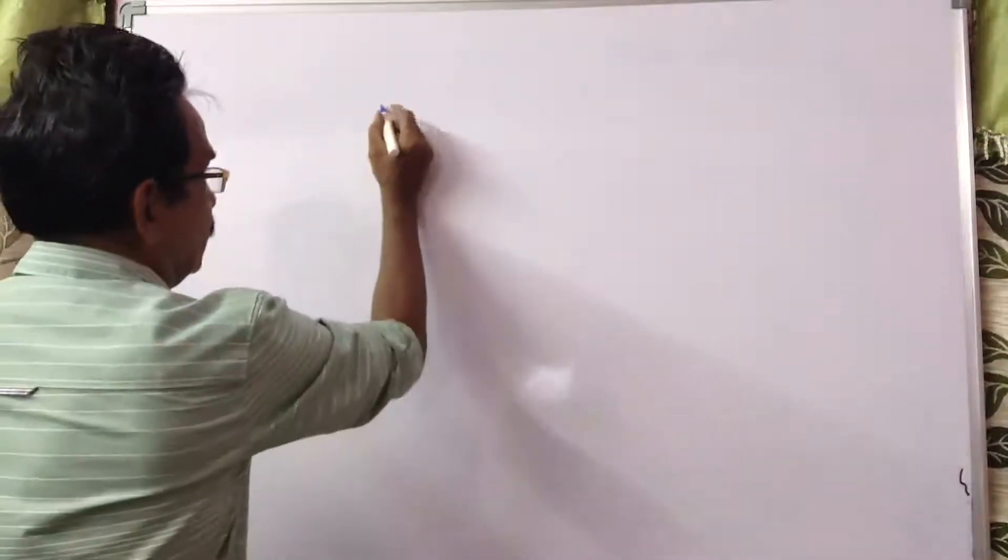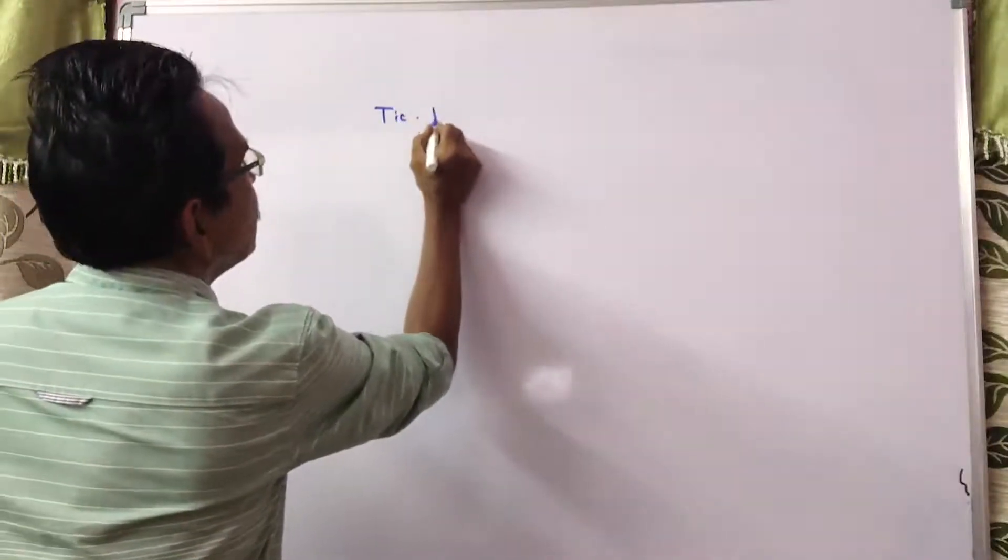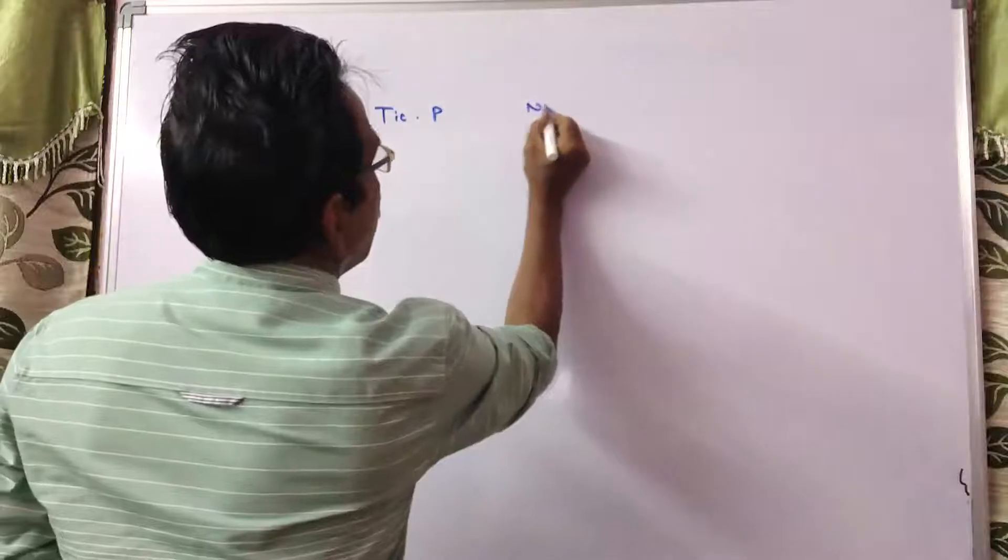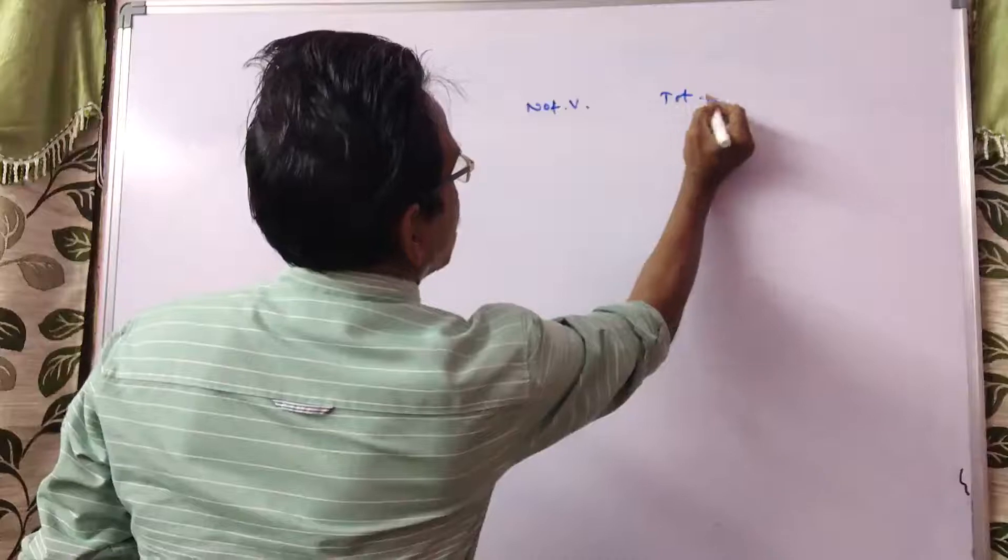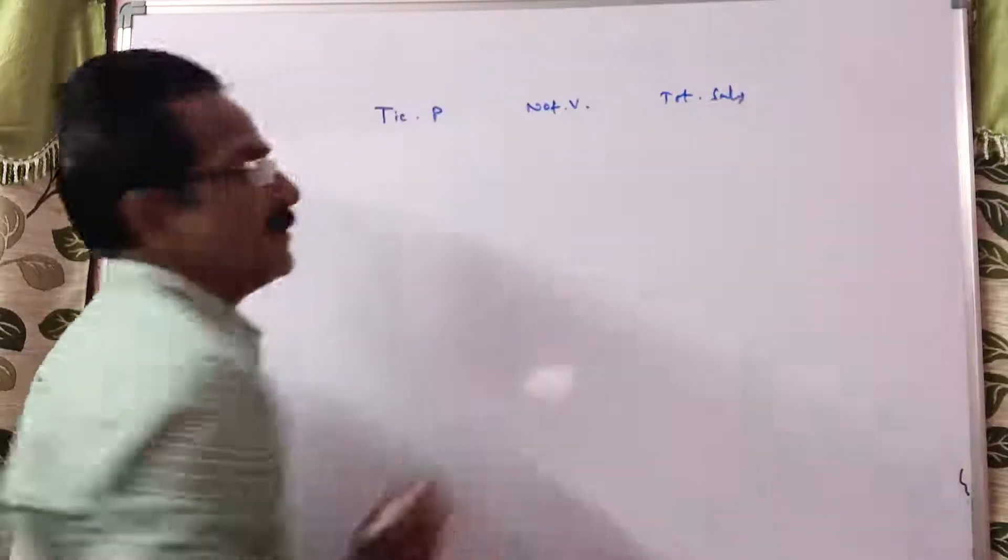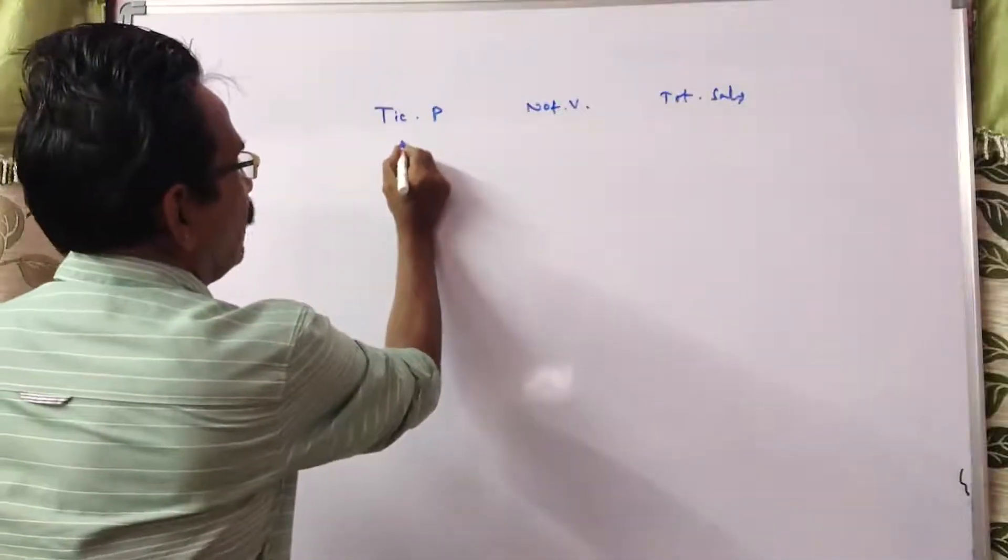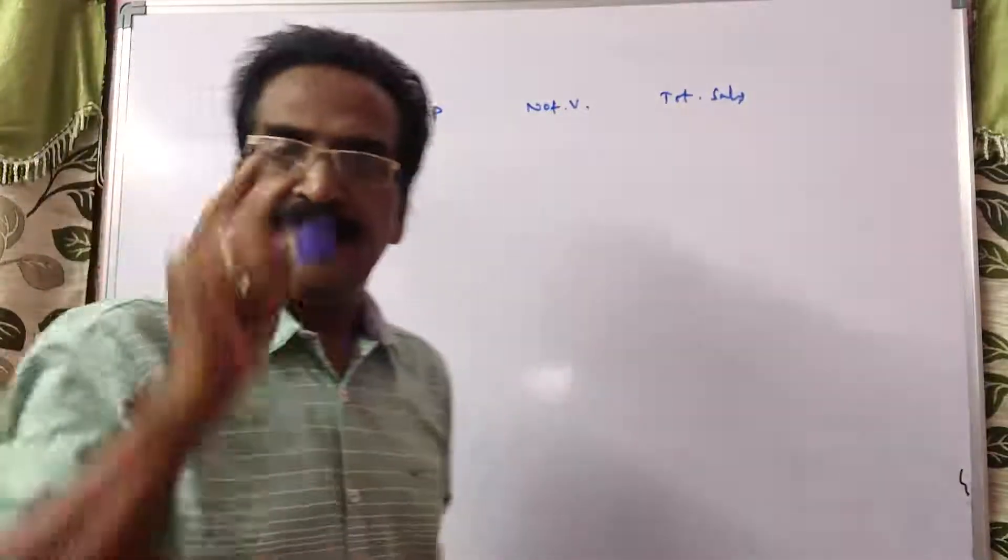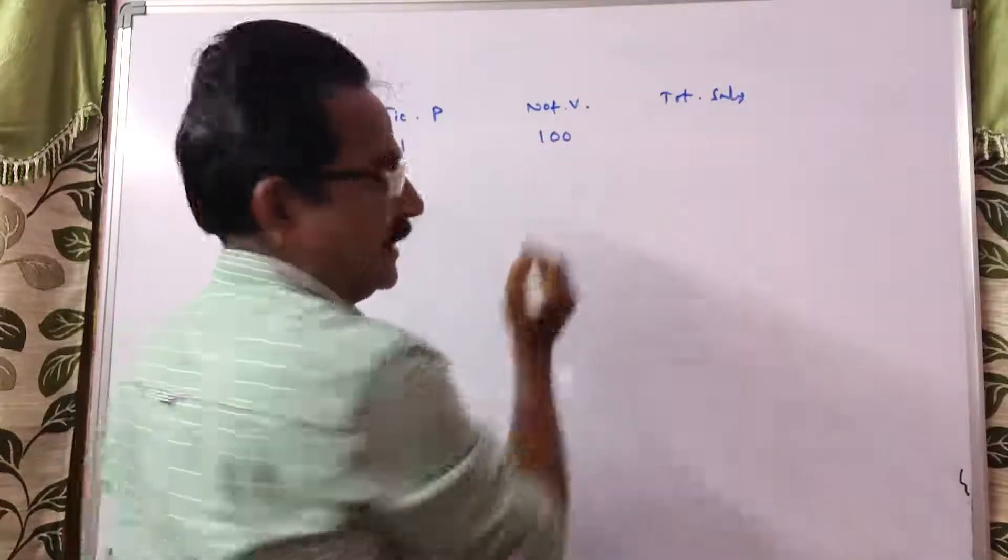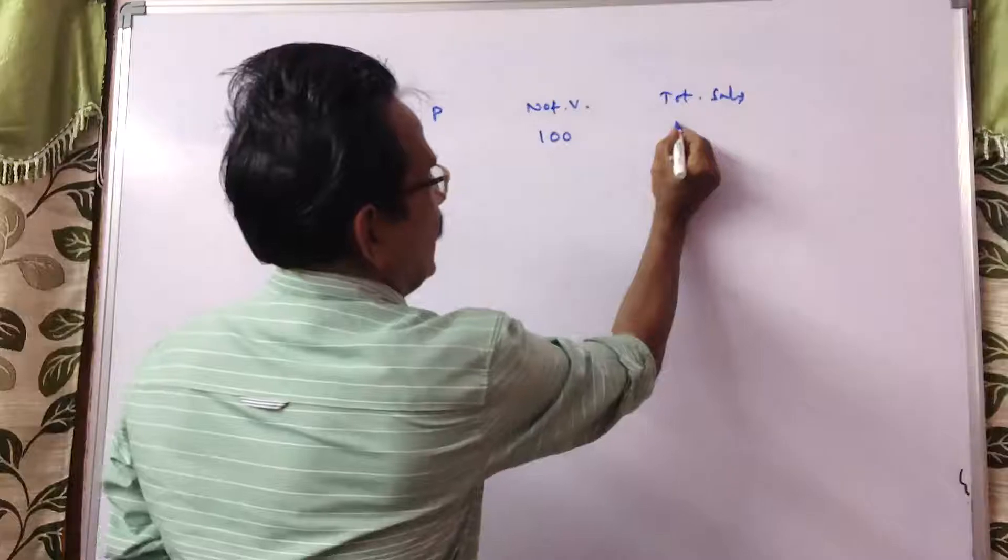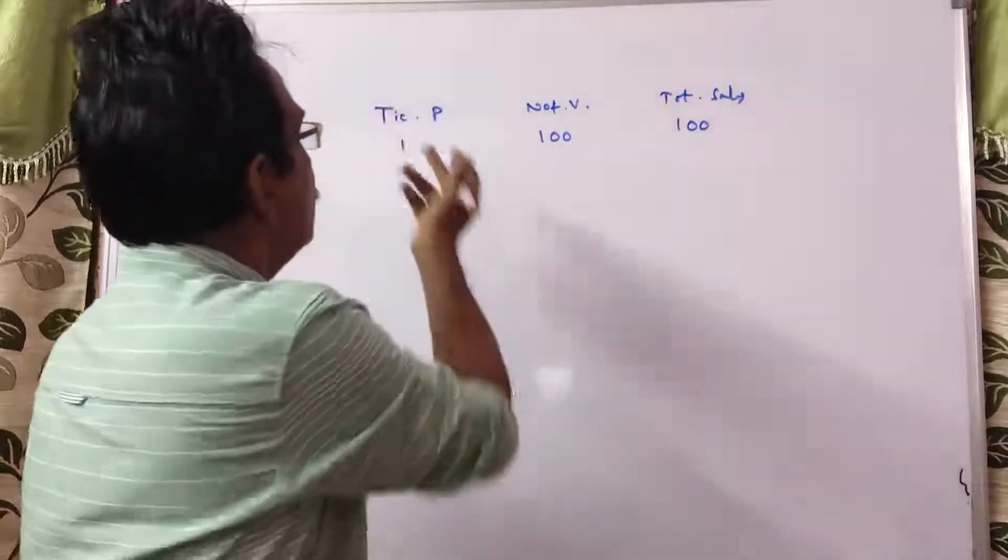See, the original price of each ticket price, number of visitors, total sales. Each ticket price earlier it was 1 rupee, then the number of visitors say 100, then the total sales is 100 into 1, 100 rupees.